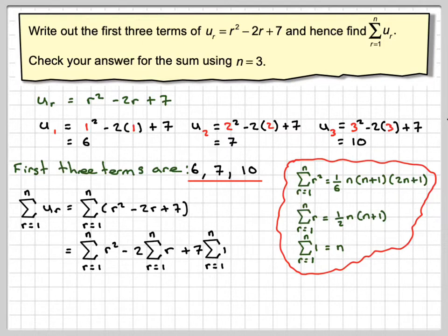So applying this to each of these, so first of all it will be 1 sixth n times n plus 1 times 2n plus 1 from this identity here, minus 2, make sure we use brackets of 1 half n times n plus 1, plus 7n.